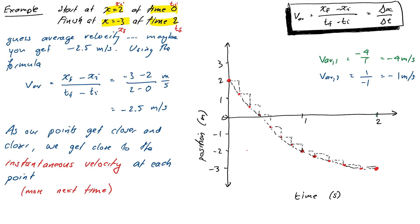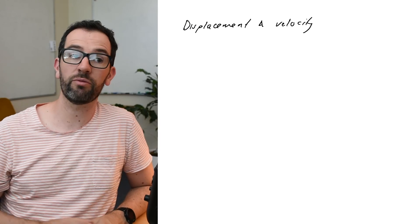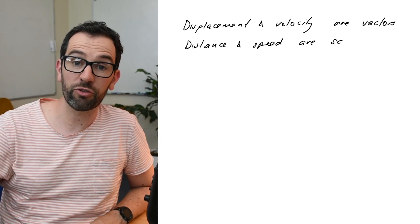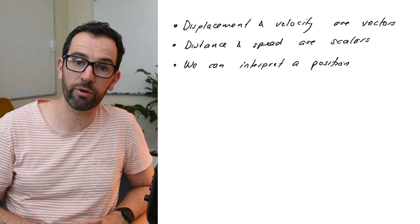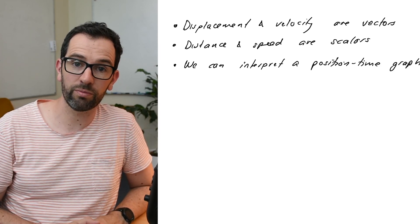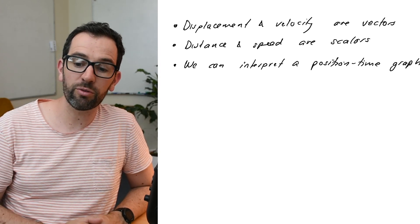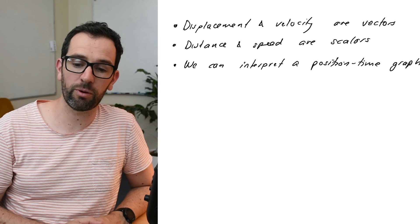Next time, we're going to talk about instantaneous velocities and how velocity–time graphs relate to position–time graphs. To recap: there are very precise definitions in physics for words that may not exactly match everyday usage. Displacement and velocity are vector quantities, so direction is important; whereas distance and speed are scalars — always positive. We also learned how to draw and interpret a position–time graph and how to locate our object at different times. Now you're ready to move on to the next workshop where you'll tackle some of these problems in context, so make sure you spend some time practicing. See you soon.